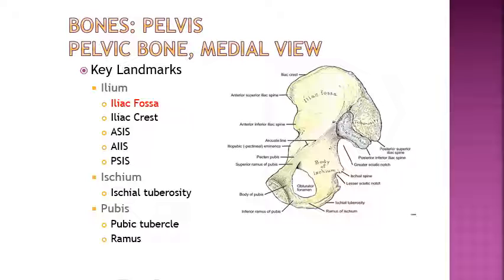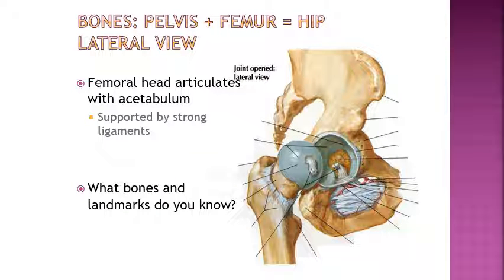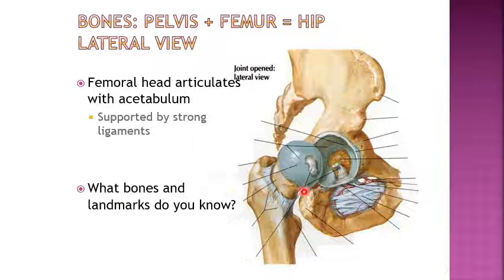An additional landmark visible only on the medial view is the iliac fossa — you cannot see this on the lateral view, only on a medial view of the ilium. Moving to the lateral view of the hip: you have the femoral head articulating with the acetabulum — that's your joint right here, supported by strong ligaments. Pause here and try to identify the landmarks you can see in this picture, then check which ones you missed.